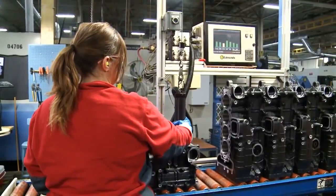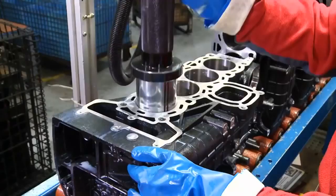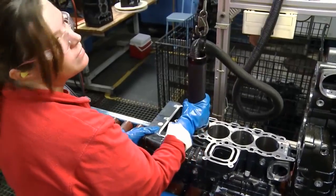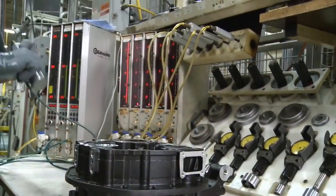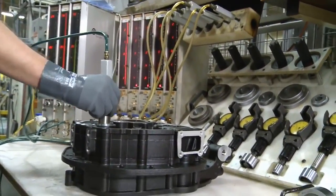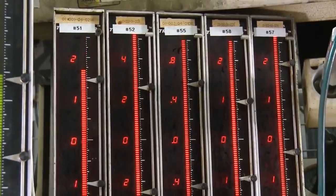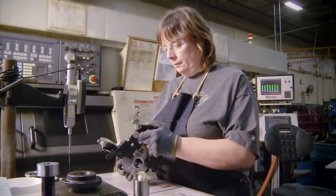While automation is an important component of building quality products, members of the Mercury manufacturing team also play a major role. Mercury employees on the manufacturing floor program the machines, perform quality checks, and still complete many jobs by hand.